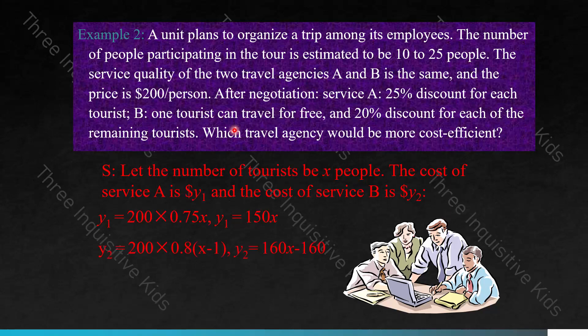For service B, we have 200 times 0.8 times (X minus 1), since one tourist travels free and the rest — that's X minus 1 tourists — each get a 20% discount. Simplified, Y2 equals 160X minus 160.